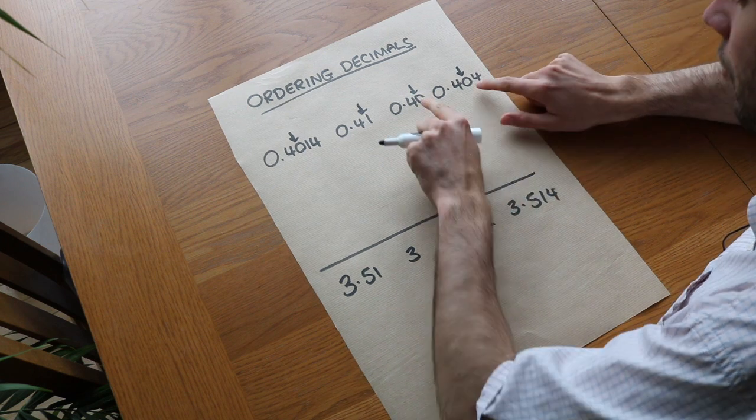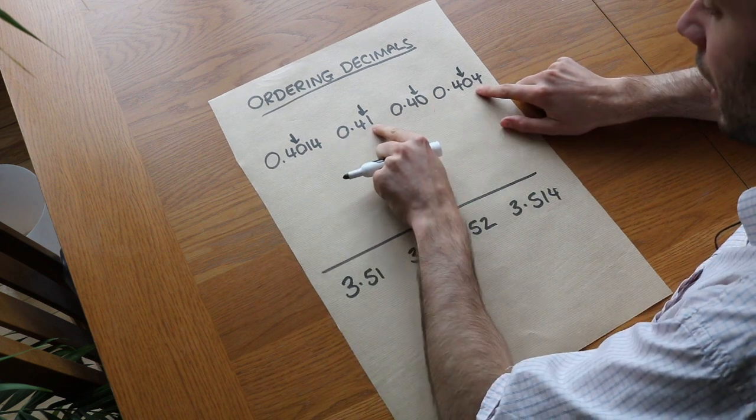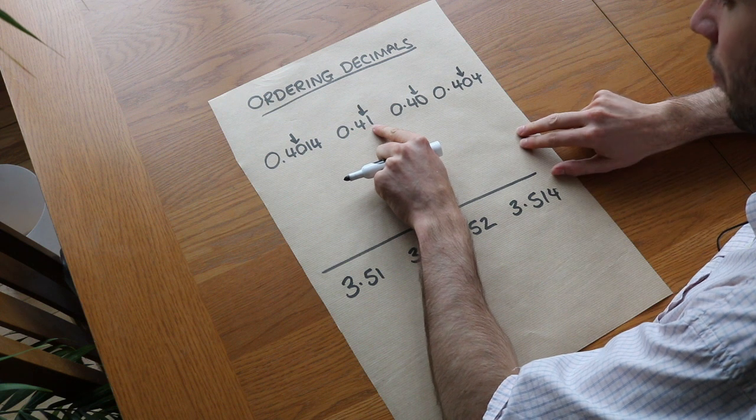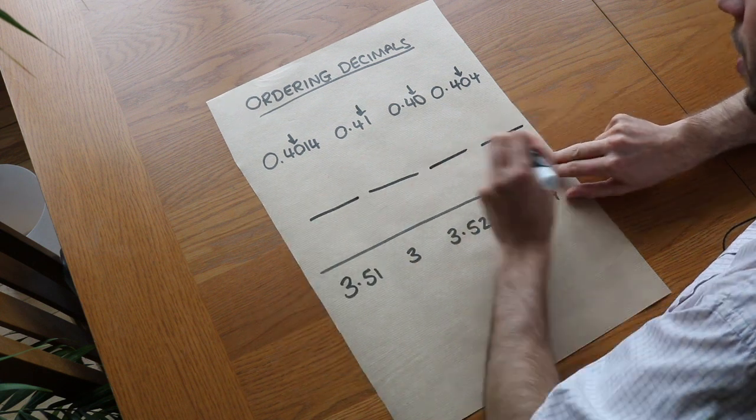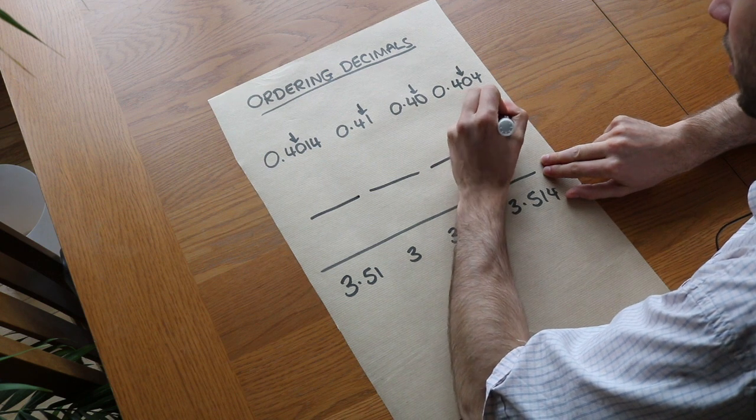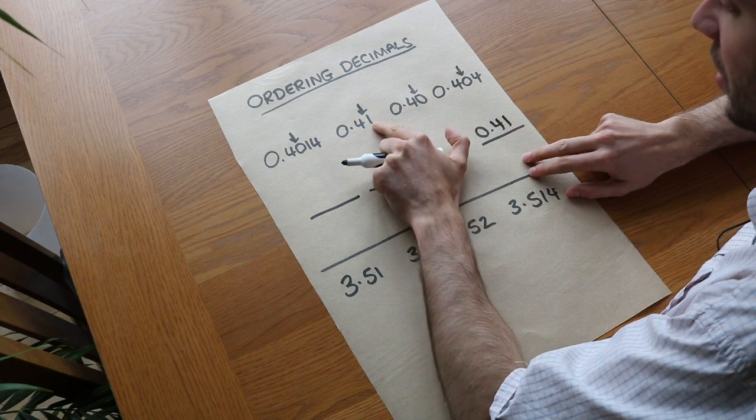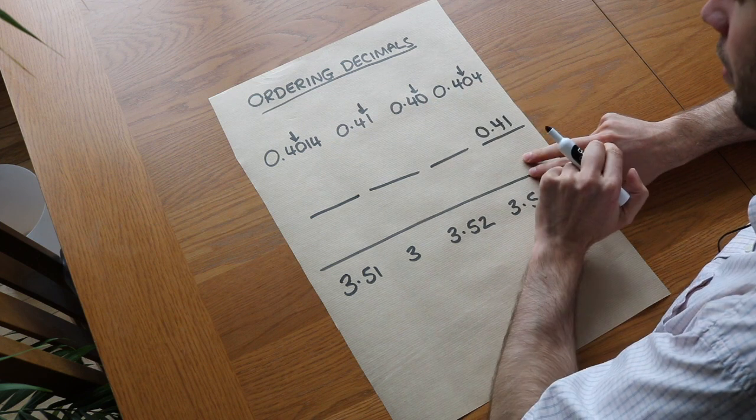So we can see that three of these hundredth digits are zero and that one is one, so we know that 0.41 is going to be the largest. If I put four lines here to put them on, I know that 0.41 is going to be the largest because the hundredth digit is larger than the other three.